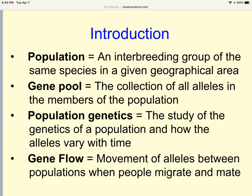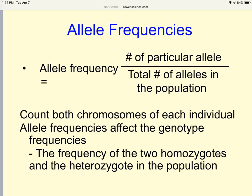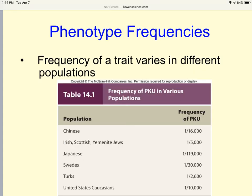As we do genetics, there are a few terms for you to go through. Population is an interbreeding group of the same species. Gene pool is the collection of all the alleles in the members of the population. Population genetics is the study of the genetics of a population and how the genes vary from time to time. Gene flow is the movement of the genes—remember, allele and gene, same terms—the movement of the genes between populations when people migrate and mate. When we calculate allele frequencies, allele frequency equals the number of particular alleles divided by the total number of alleles in the population. If you are looking at one person, they will have two alleles because they have one from mom, one from dad. If you're looking at total number of alleles in a population of, say, 15 people, then you would have 30 alleles because they receive one from each parent.